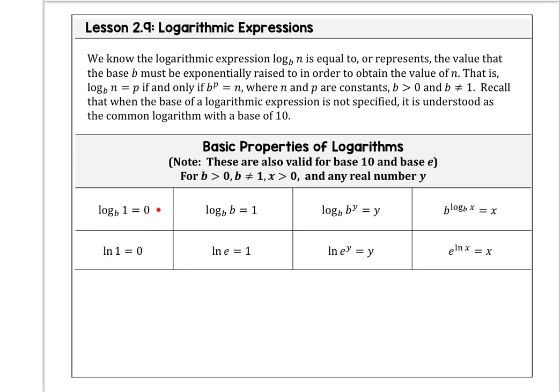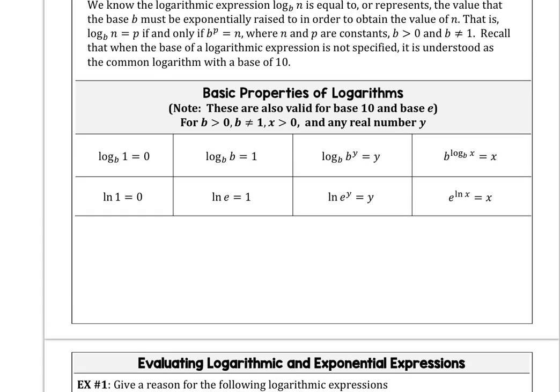Log base B of 1 is equal to 0. Log base B of B is 1. Log base B of B to the Y is just Y. And B raised to the log base B of X is X. Those properties hold true for natural log as well. We know that the general rule states that if a base is raised to a power, that result is a number, and that's a biconditional statement, so that log base B of a number gives us the power.